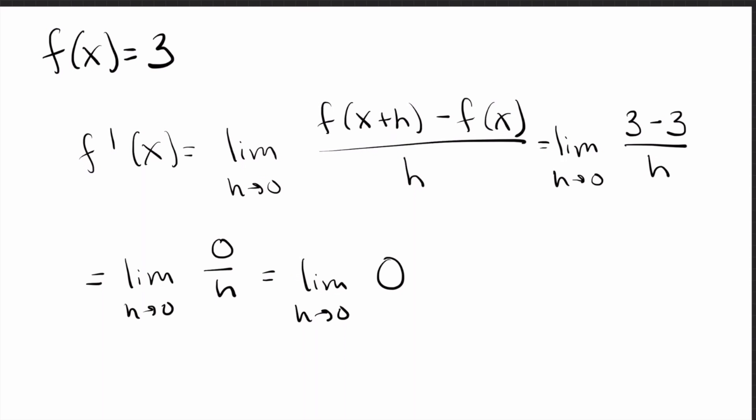One thing some people struggle with: normally when you take limits you want to plug in h equals zero, since h is going to zero. But there are no h's, so actually that means it's easier. I look at this and change h to be zero — well, there are no h's to change, so it just stays zero. So f prime of x equals zero.